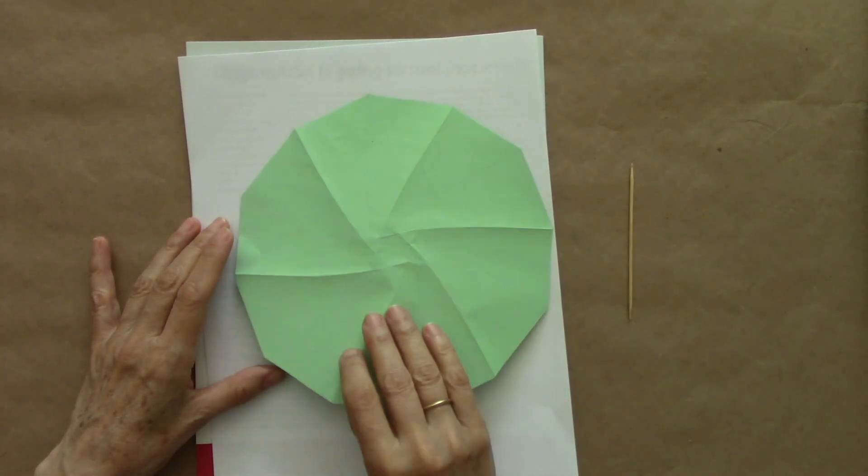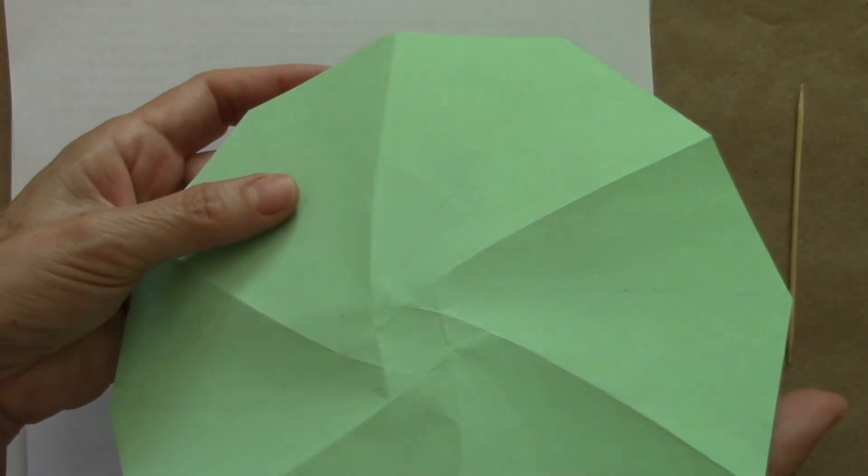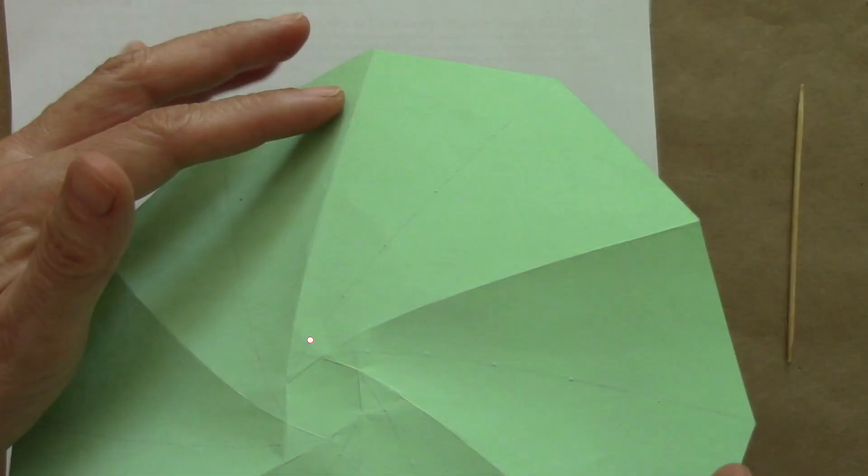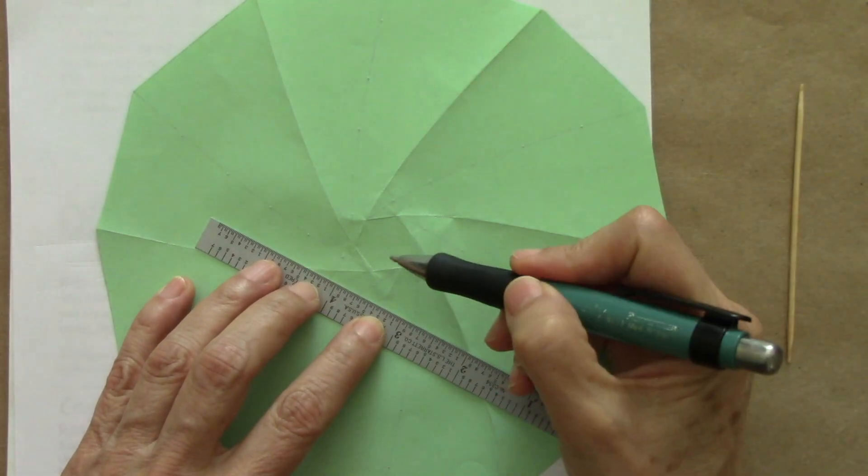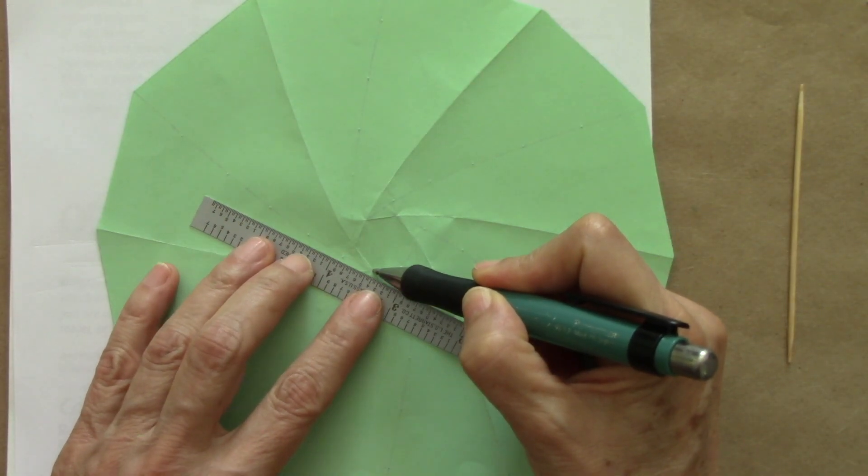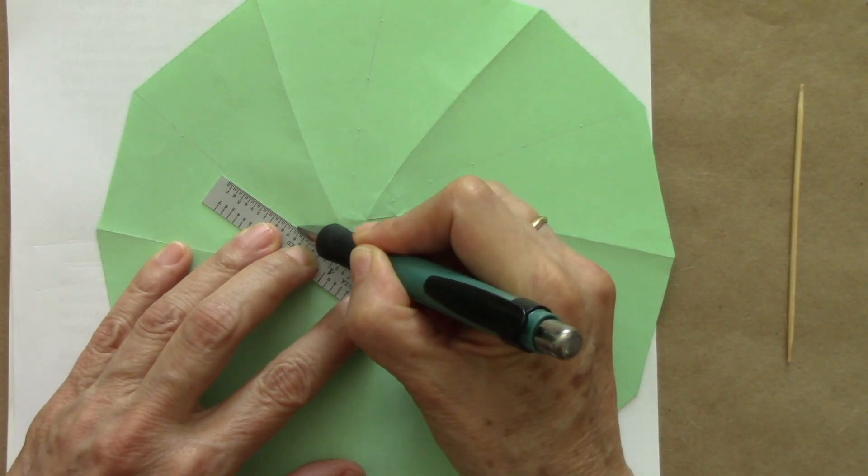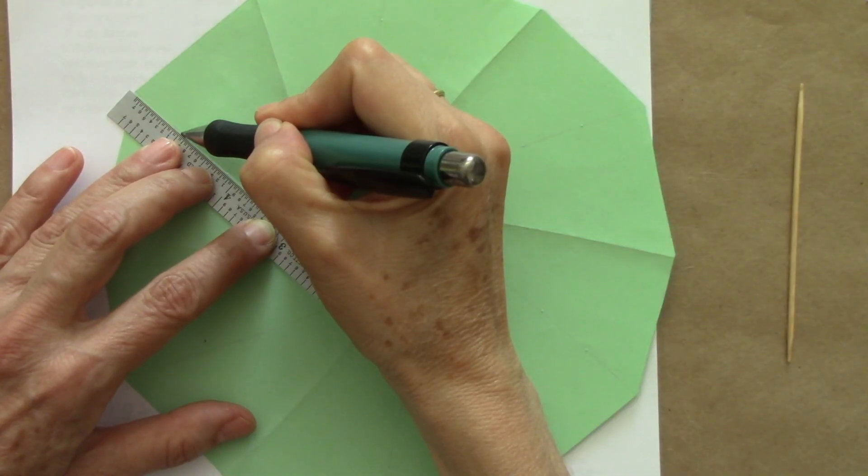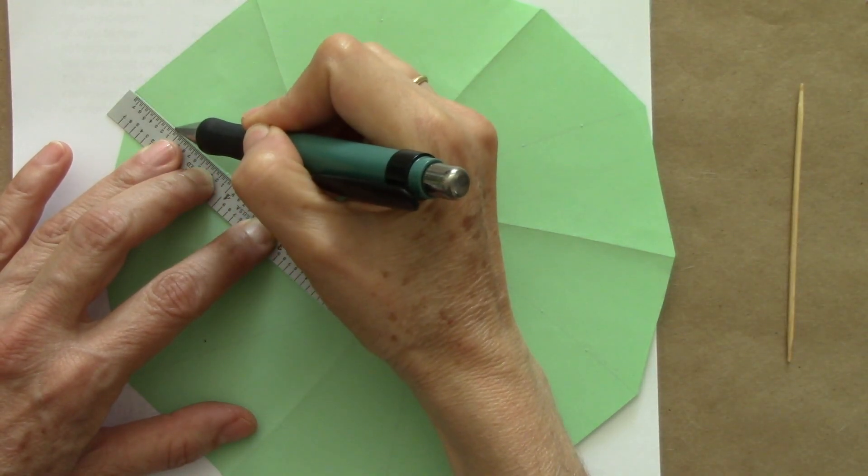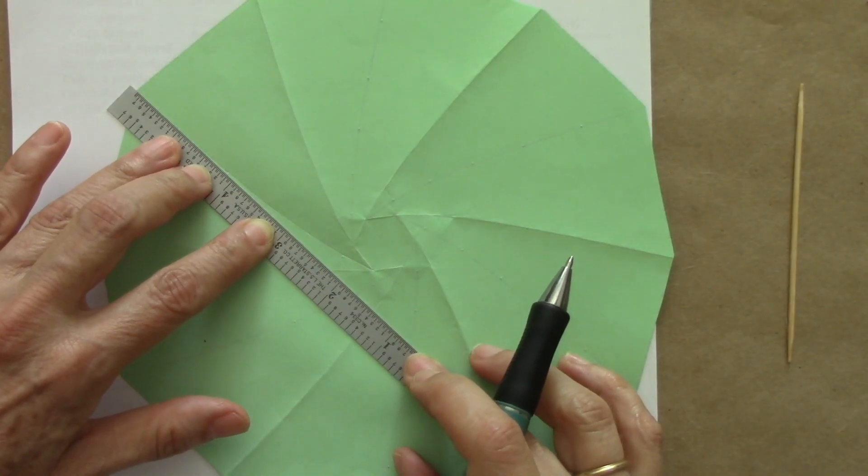Now I turn the paper over and I can see the markings. Begin by here at the corner of the hexagon section by section, always connecting the points that we had scored on the other side. Remember that we have to angle perfectly.